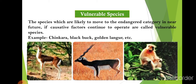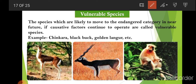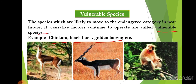Vulnerable species are species likely to move into the endangered category in the near future. If the causative factors continue to operate, these species will become endangered. Examples include chinkara, blackbuck, and golden langur.